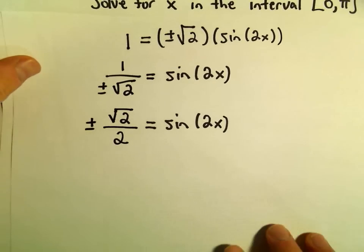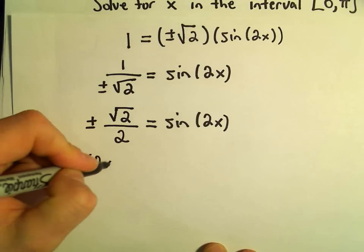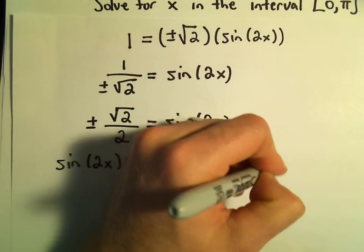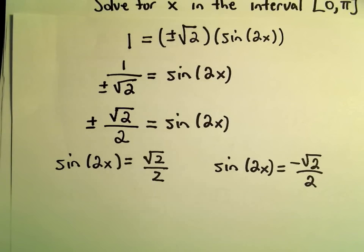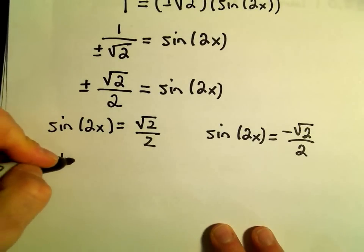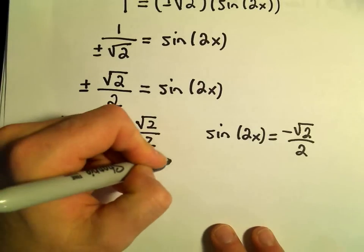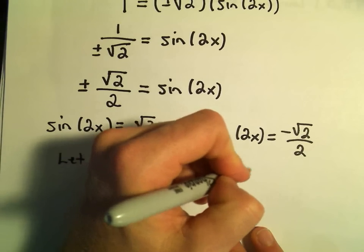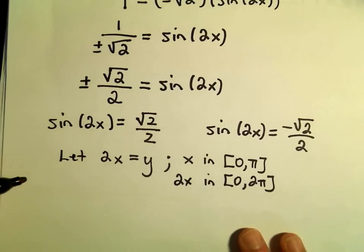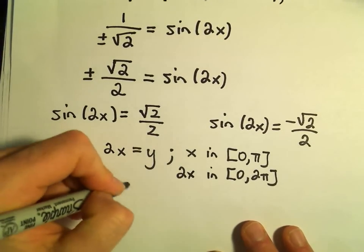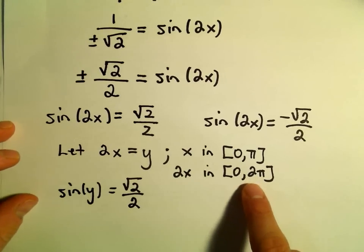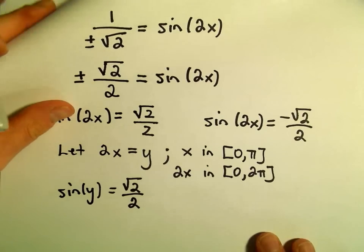We wanted our solutions to be in the interval 0 to π. So we get two equations: sine of 2x equals positive square root of 2 over 2, and sine of 2x equals negative square root of 2 over 2. I'm going to replace 2x with y. Since x is in the interval 0 to π, 2x would be in the interval 0 to 2π. So I'll find solutions where y is in the interval 0 to 2π.